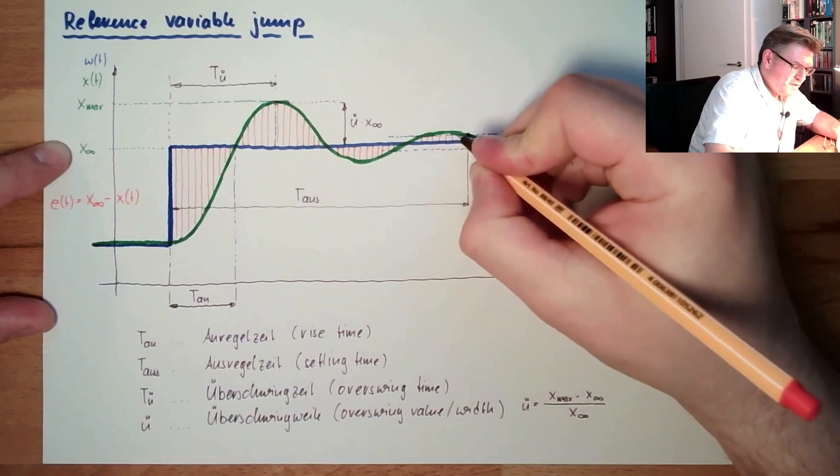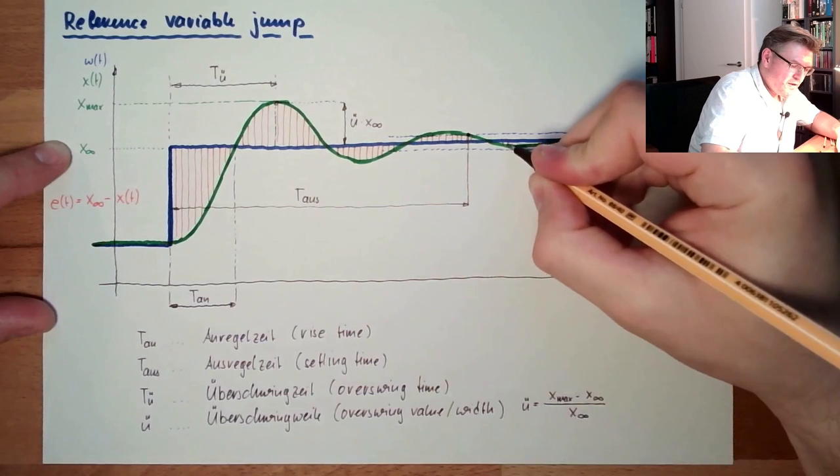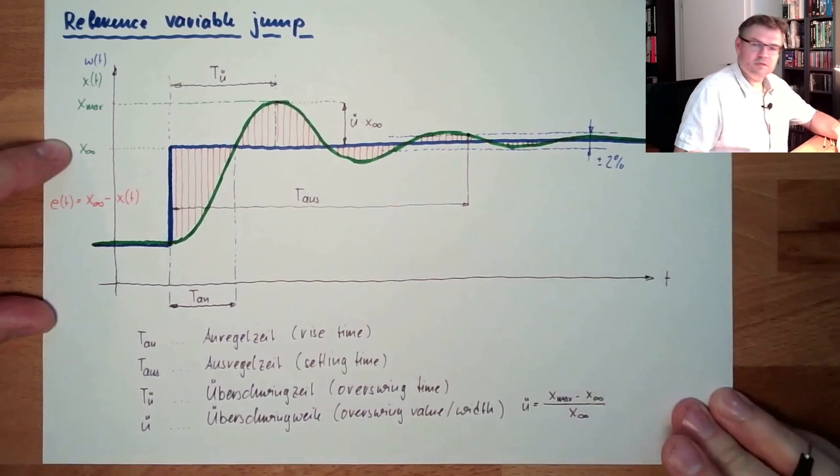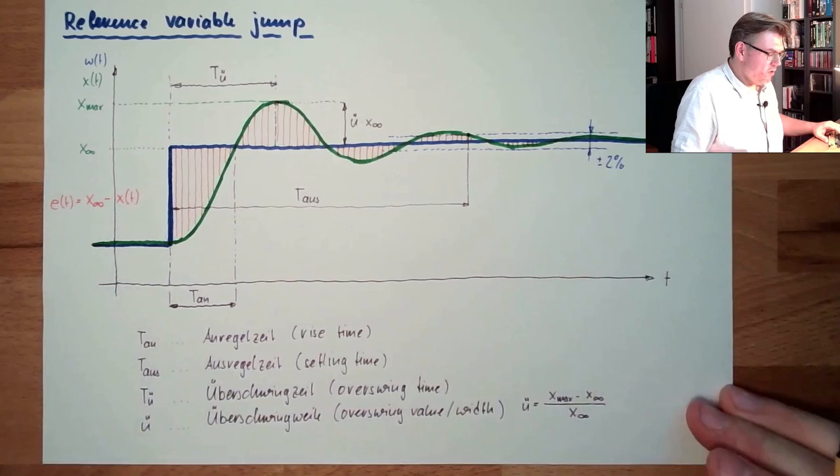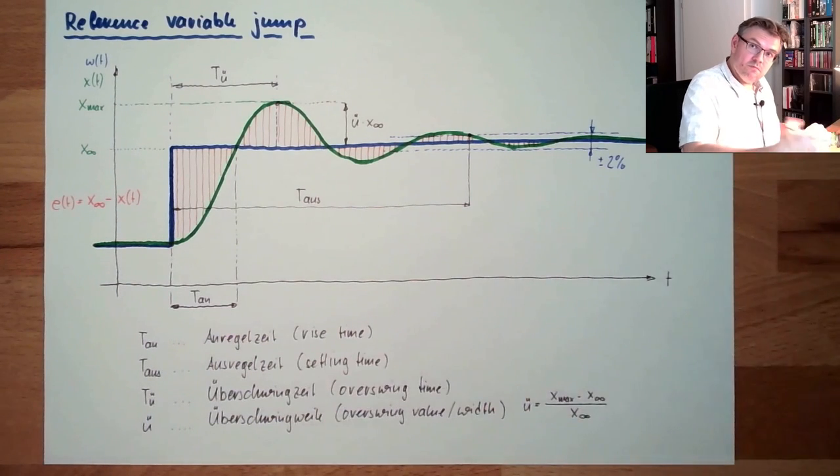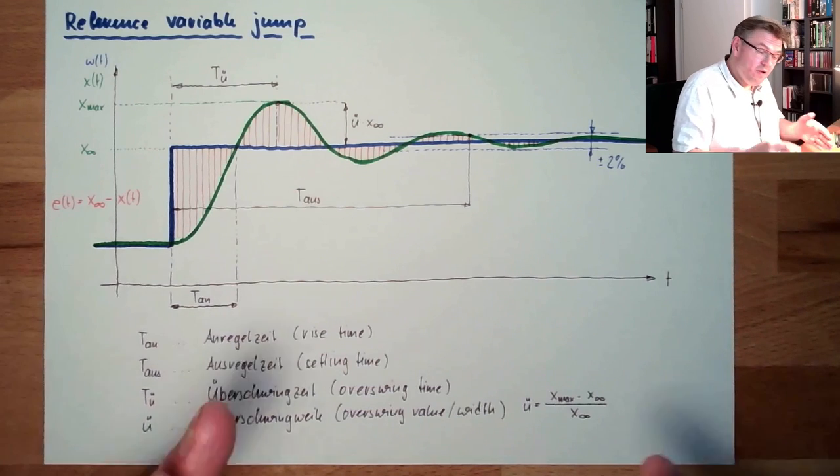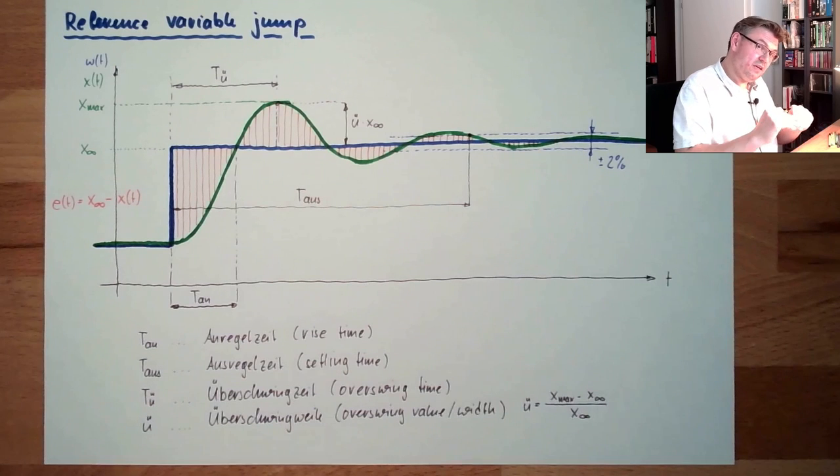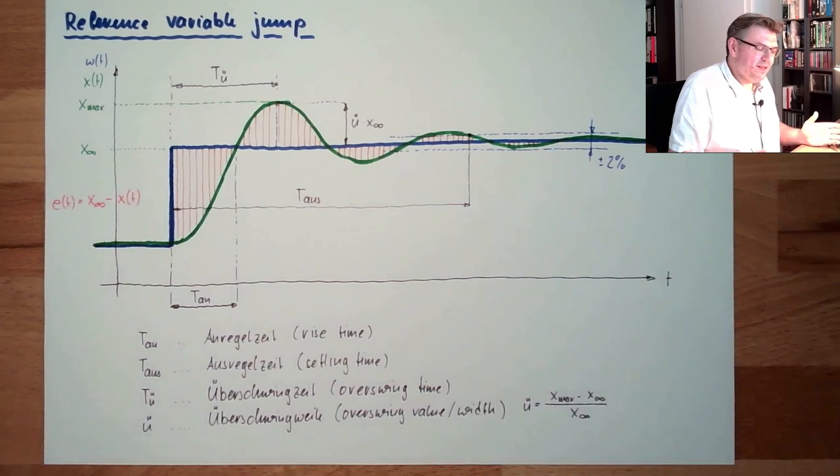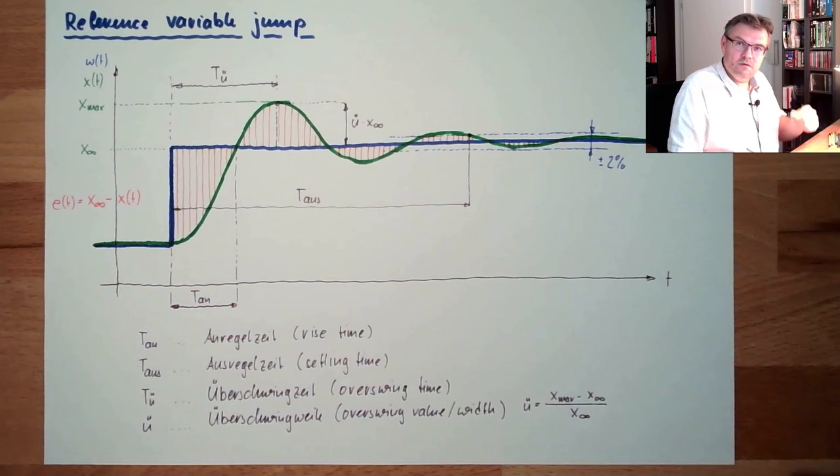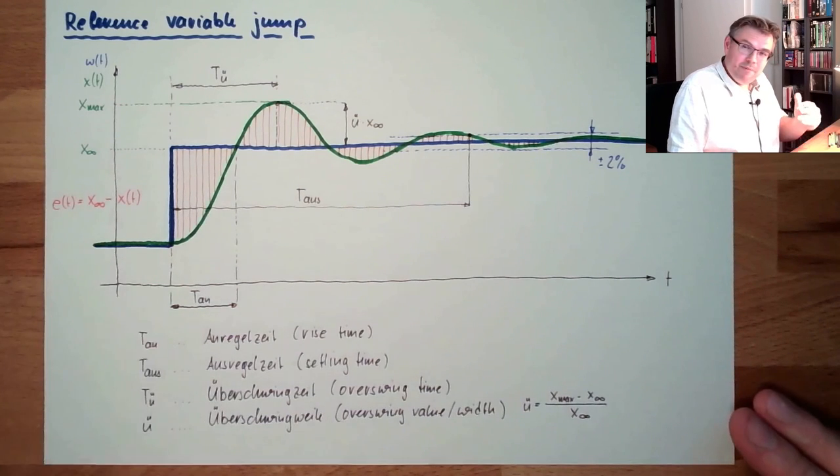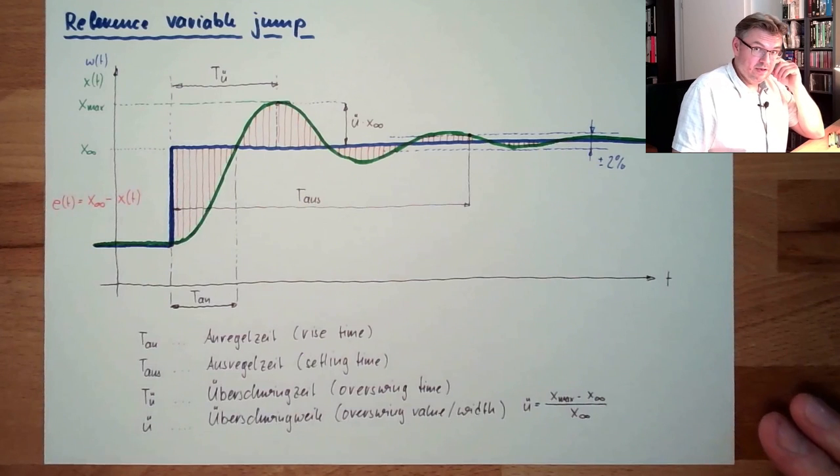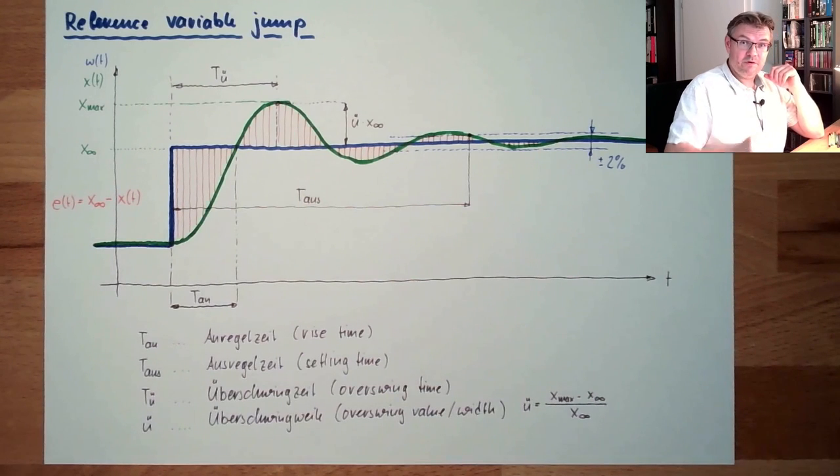So we cannot just build a sum of all those errors. Because in worst case, if something is swinging periodically, then the error, if I just summarize it, will be simply zero. Because the positive and the negative error is exactly equalizing itself. So that cannot be a measure for quality. However, summing up an error already is a good idea. So we're talking about integral quality criteria.